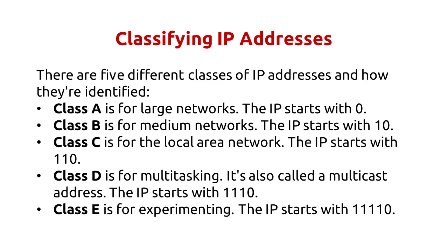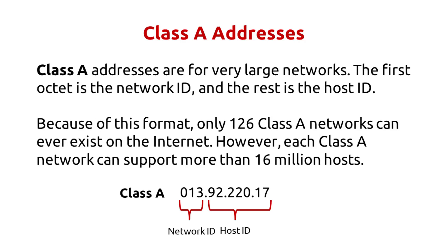You'll only learn about Class A, B, and C because they're the most commonly used. Class A addresses are for very large networks. The first octet is the network ID and the rest is the host ID. Because of this format, only 126 Class A networks can exist on the internet. However, each Class A network can support more than 16 million hosts.